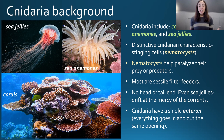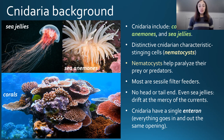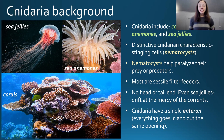Sea jellies and sea anemones don't have hard skeletons and therefore don't get preserved very often in the fossil record. Corals have a very extensive fossil record, so we'll be focusing mostly on them in terms of classification, fossil record, morphology, etc. However, we will touch on all three groups as we discuss how cnidaria reproduce and their ecology before we get to the paleontological details.